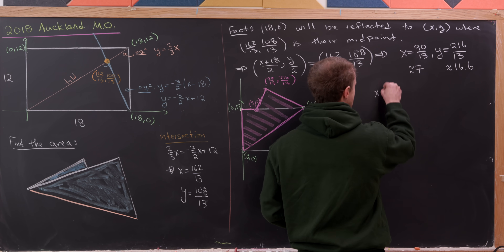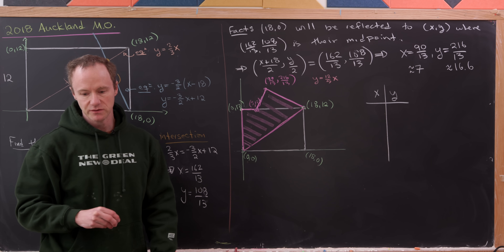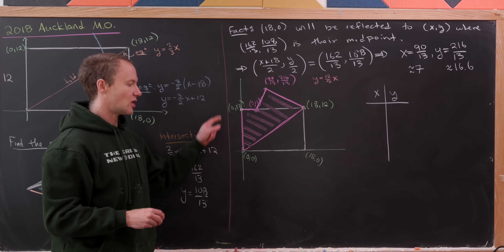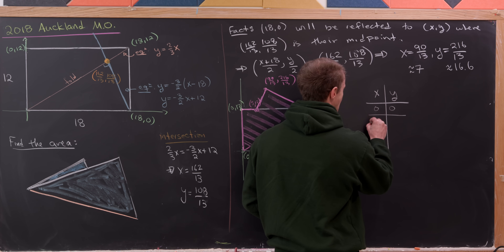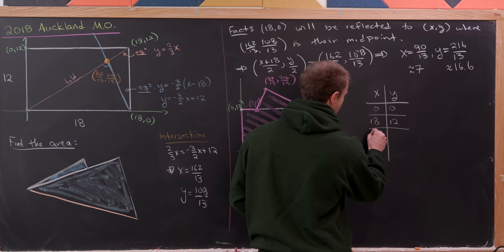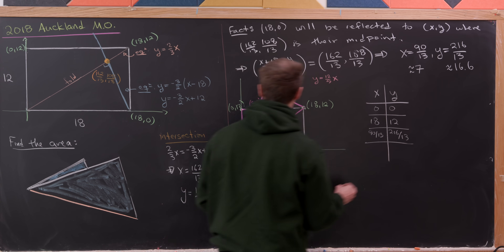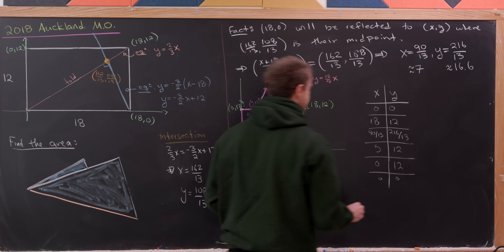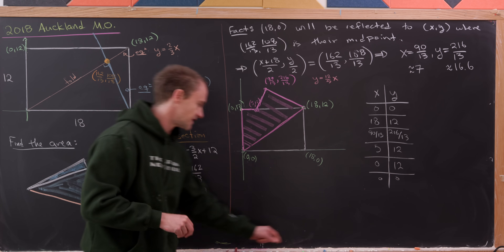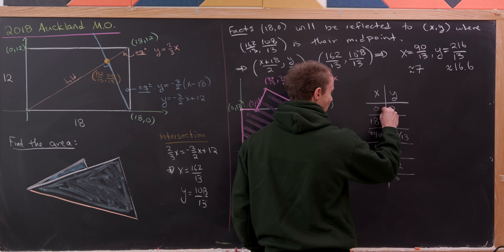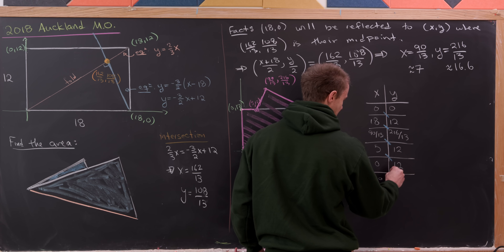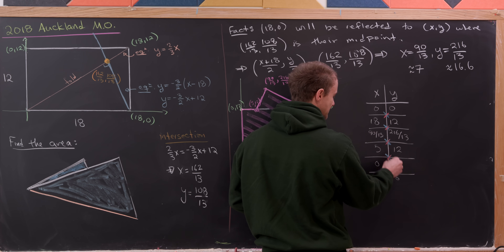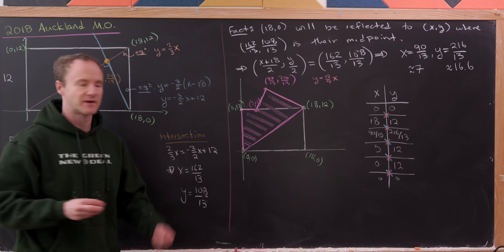Now we're ready to use the Shoelace Theorem to calculate the area. We lay out the vertices of the polygon in counterclockwise order, starting and ending at (0, 0): (0, 0) → (18, 12) → (90/13, 216/13) → (5, 12) → (0, 12) → (0, 0). The Shoelace method takes the diagonal products in two directions — the blue products and the red products — and the area equals half the absolute difference of their sums.